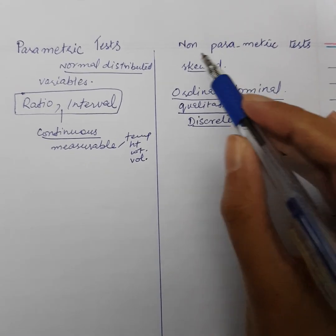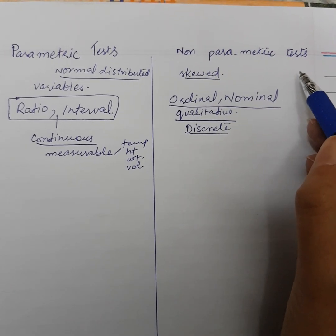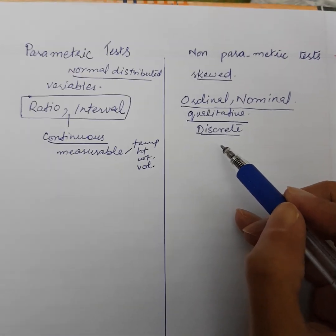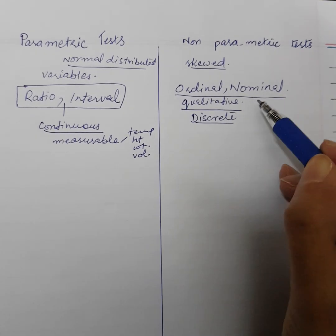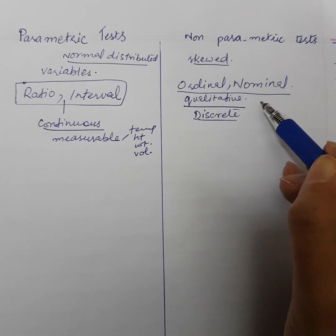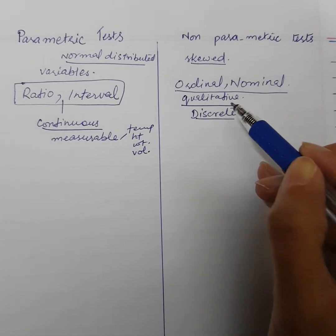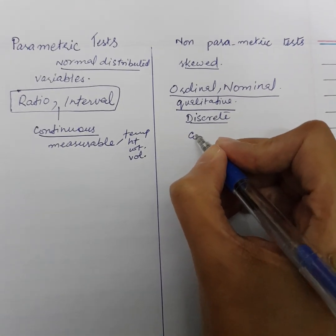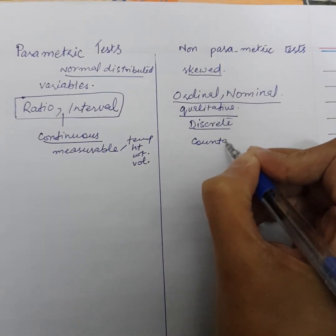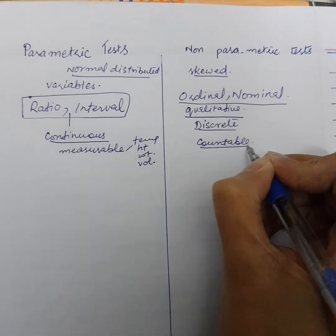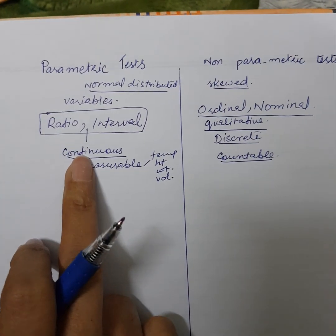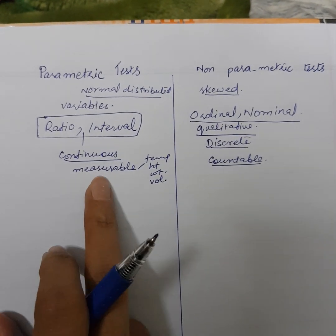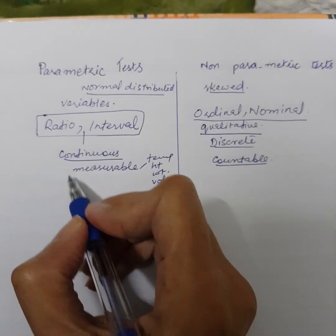So, when we use the non-parametric test, the data is skewed and has ordinal or nominal variables, which are also called qualitative variables — they are discrete and countable. In contrast, continuous variables used in parametric tests are quantitative and measurable.